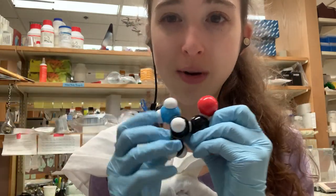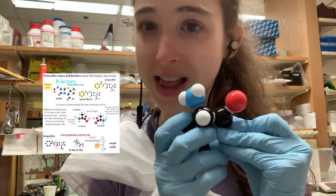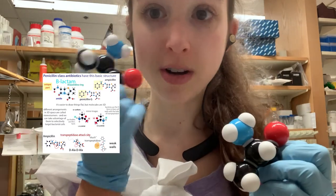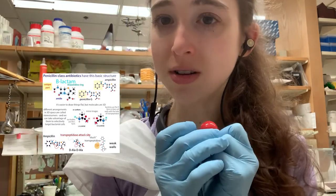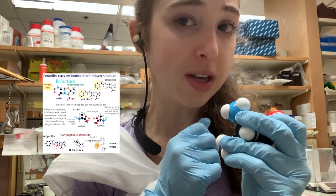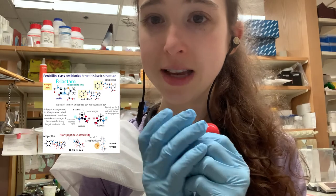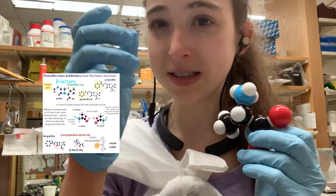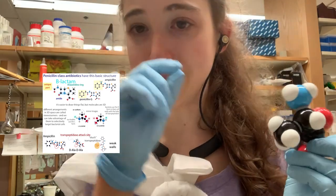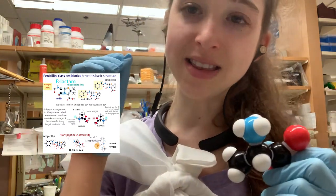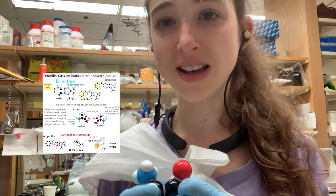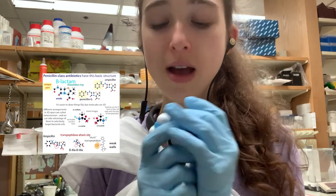Most of the time our amino acids are L-form, but there is an instance where bacteria actually use D-alanine — a couple of D-alanines — to build strength in their cell walls. Beta-lactam antibiotics like penicillin can mimic the D-ala-D-ala that bacteria use, so the bacteria try to use it, get stuck on the antibiotic, and that's how those antibiotics work.